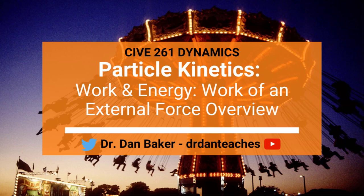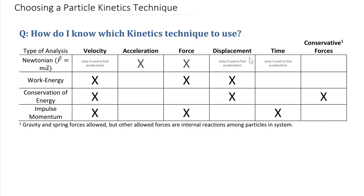Hello students of Dynamics, this is Dr. Dan Baker. In today's video we're going to talk about work and energy, but to put work and energy into a framework and context, let's take a look at the various types of particle kinetics tools. Back in Chapter 13 of the Hibler textbook we covered Newtonian particle kinetics — the key thing is that the Newtonian approach is an acceleration-based approach, relating forces to acceleration.